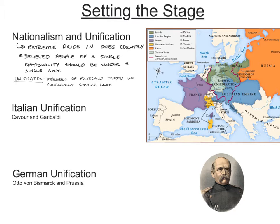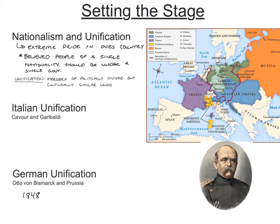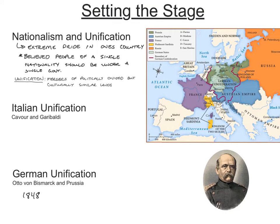For German unification, in 1848 the Germans wrote a liberal constitution. And in 1861, a man named Otto von Bismarck was elected as Prime Minister of Prussia. Von Bismarck was one of the greatest politicians of his time. He fought a series of wars ending in 1867, and that ended up with Germany unified.